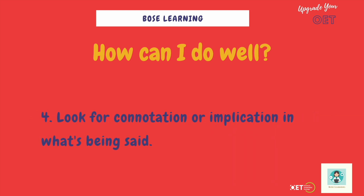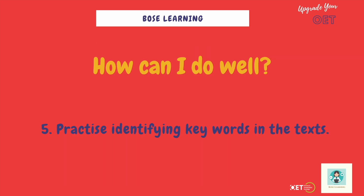Number four: look for connotation or implication in what's being said. Read something and ask yourself — what did the author mean? Why have they chosen this word and not another? And number five: practice identifying key words in texts. Think about which words are essential for conveying meaning. You can also apply this to practice questions when looking at the sentence stem — which words are important?